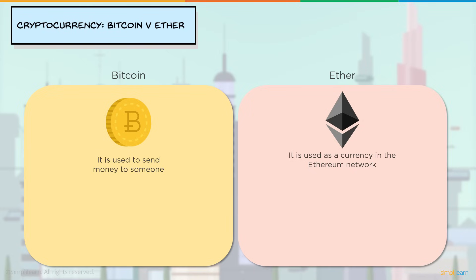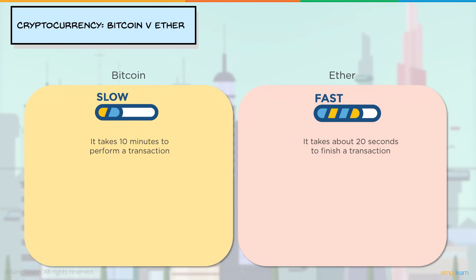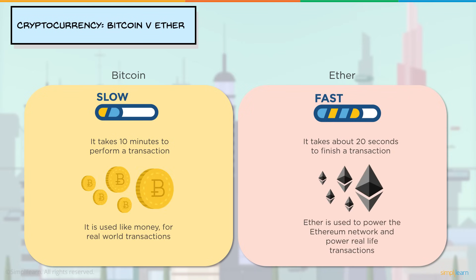The differences: Bitcoin is used to send money — very similar to how real-life currency works. Ether is used as a currency within the Ethereum network, though it can also be used for real-life transactions. Bitcoin transactions are manual, meaning you personally perform them. With Ether, transactions can be manual, automatic, or programmable — they can take place when a certain condition is met. Bitcoin takes 10 minutes to perform a transaction, the time it takes for a block to be added to the blockchain. With Ether it takes about 20 seconds.